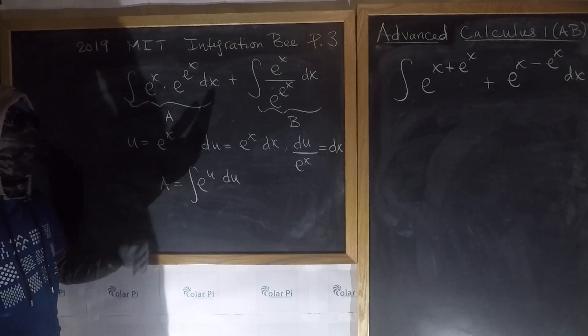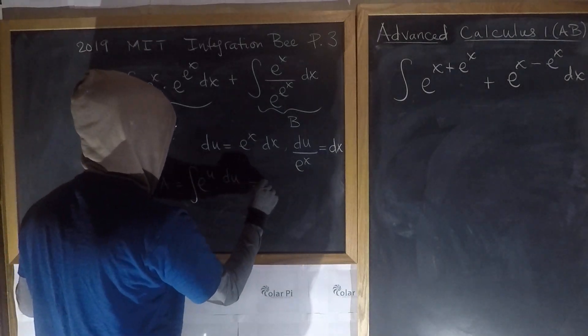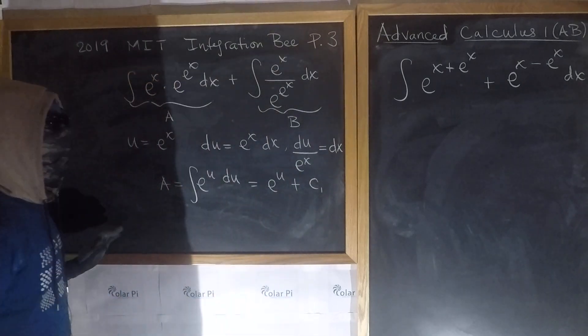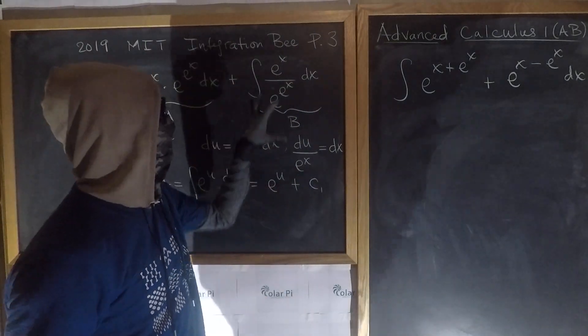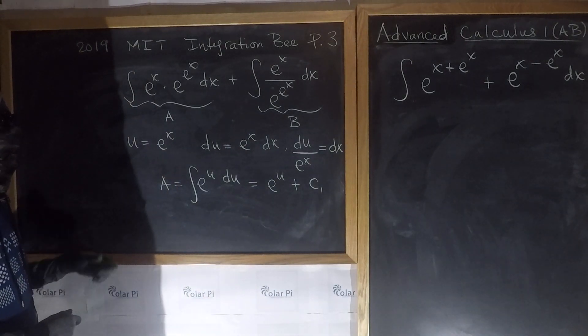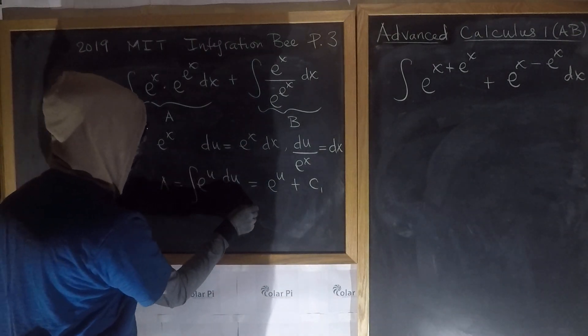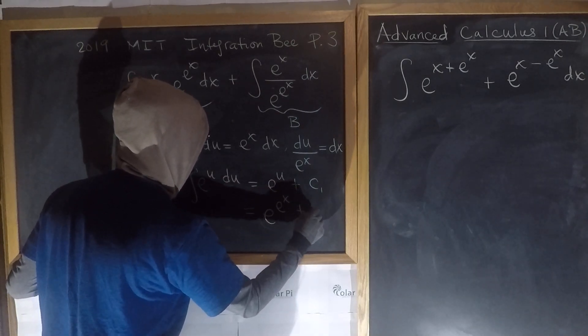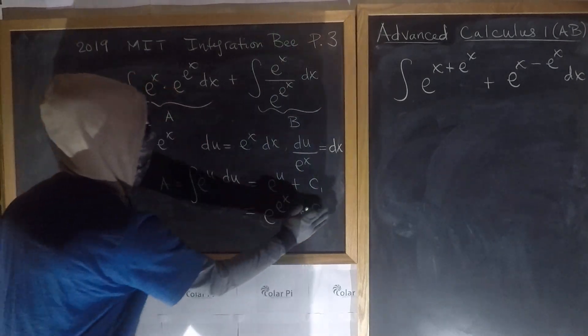And what's the integral of e to the u du? It's just e to the u plus, let's say, constant 1. And I say constant 1 because I anticipate another constant from this integral. Now, calling back what u was, our final answer for A is going to be e to the e to the x plus c1.